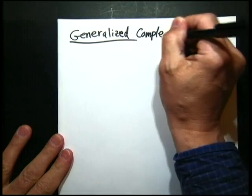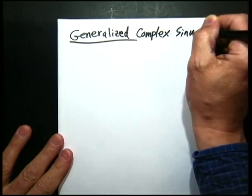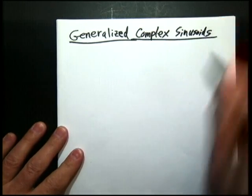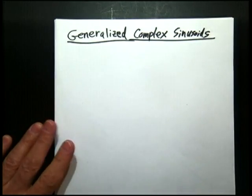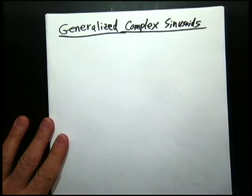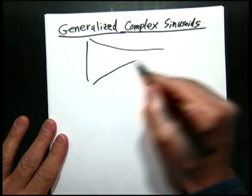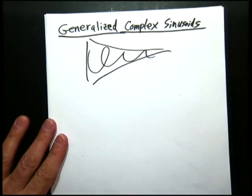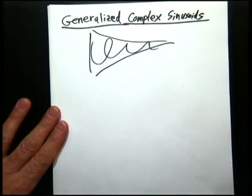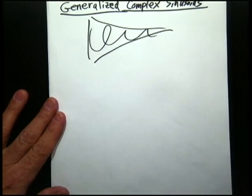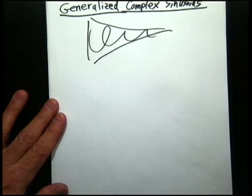Generalize the complex sinusoids. You know what the form of an exponential is. All we're going to do basically is multiply our complex sinusoids by our exponentials. This will be done in the s-plane.